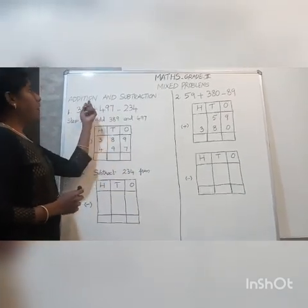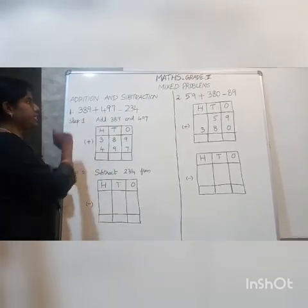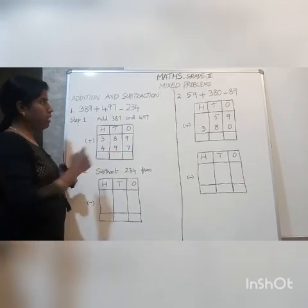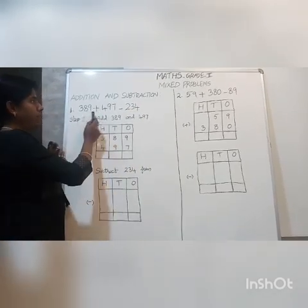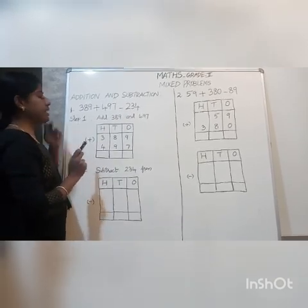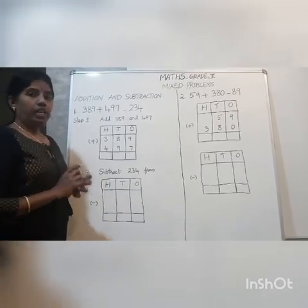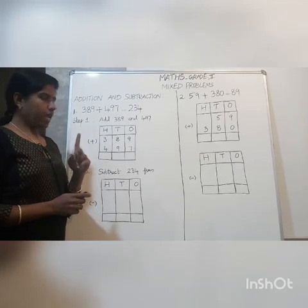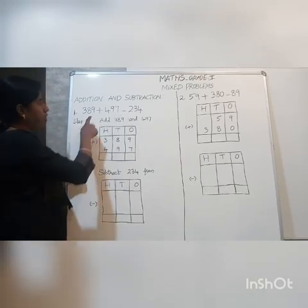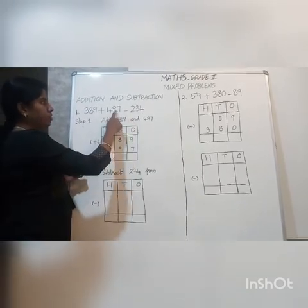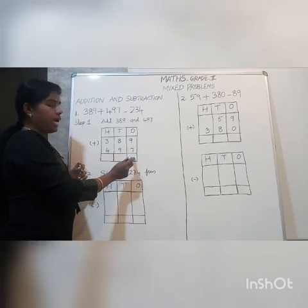So mixed problems will have addition and subtraction. The first sum is 389 plus 497 minus 234. Now do you understand — we have addition as well as subtraction here in the same problem. For this addition and subtraction, we need to do it in two steps. The first step is to do the addition part: 389 plus 497.